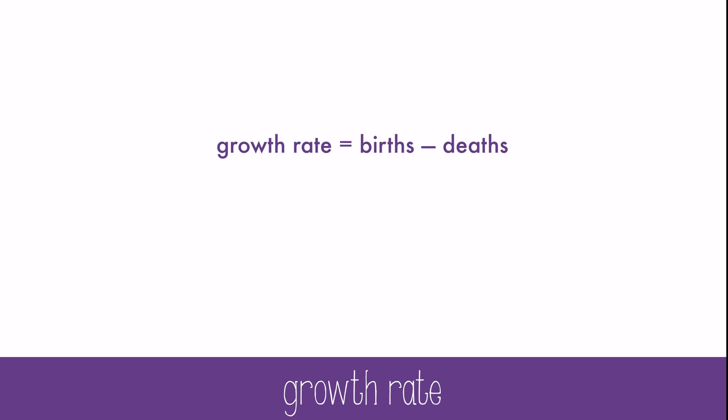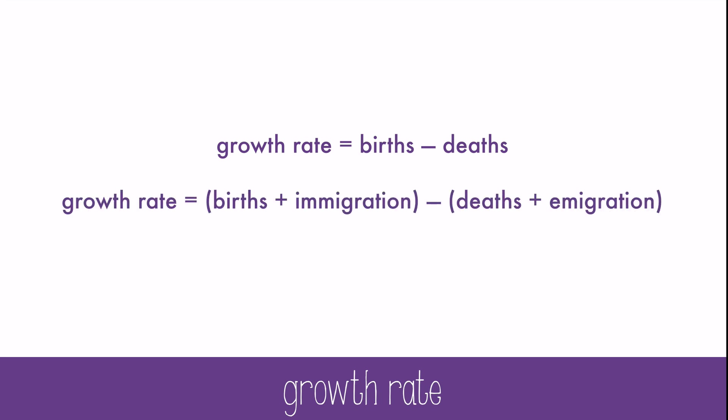But this is perhaps oversimplified. In reality, there's also immigration and emigration to consider. So here's a more realistic growth rate calculation: the growth rate is equal to the births plus the immigration minus the deaths and the emigration. Immigration means individuals coming into a population, and emigration is individuals exiting the population — immigration in, emigration exit.